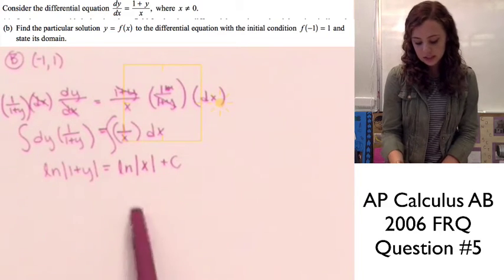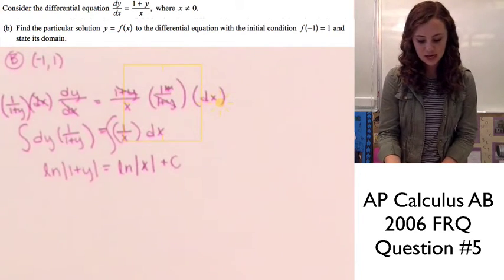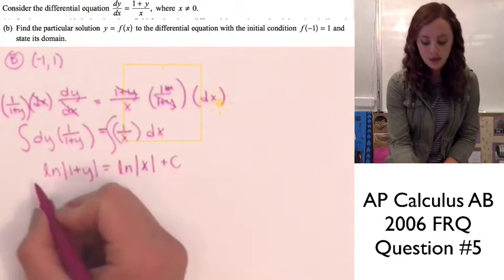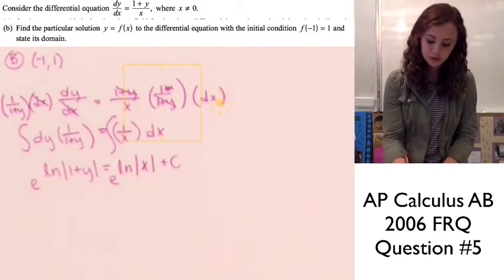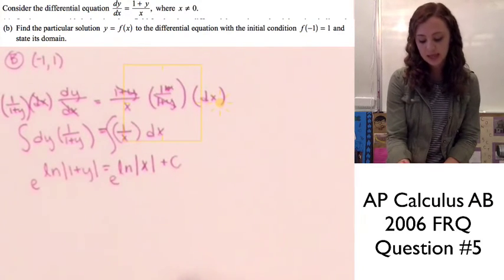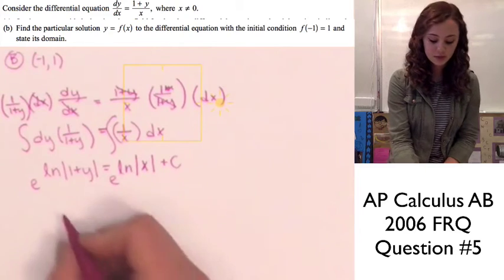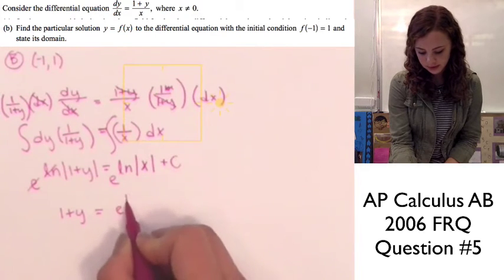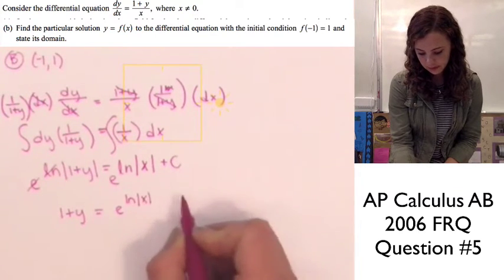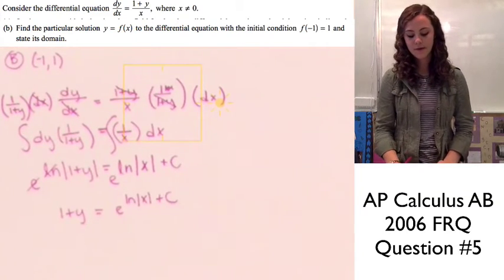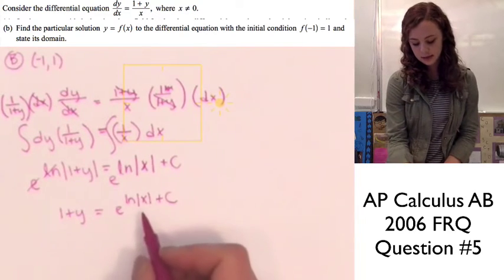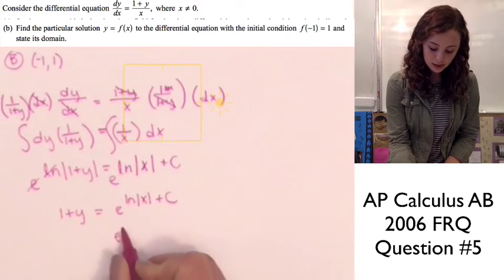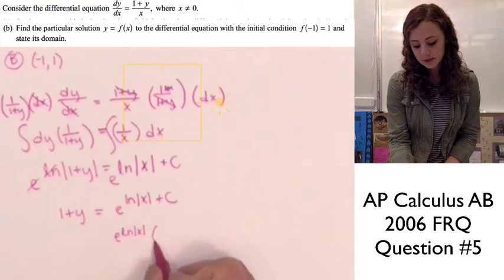We need to get rid of the natural log, so we raise both sides to the power of e. We know that e^(ln|1 + y|) simplifies to just (1 + y) because they cancel out. On the right side, using properties of exponents, we can split e^(ln|x| + C) into e^(ln|x|) times e^C.